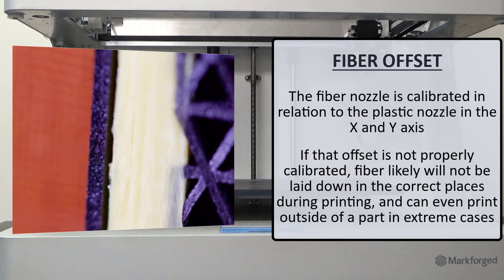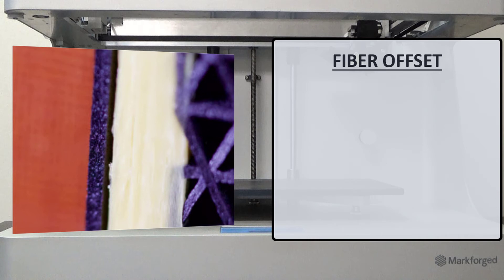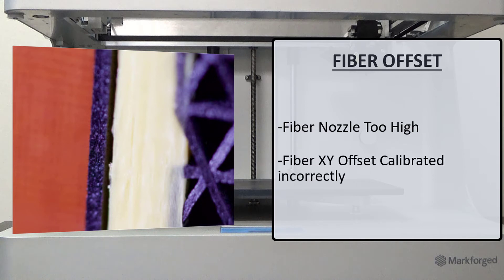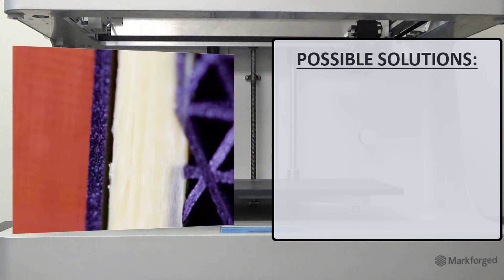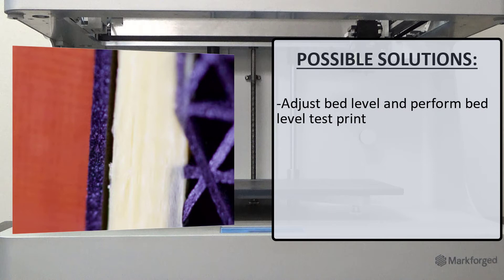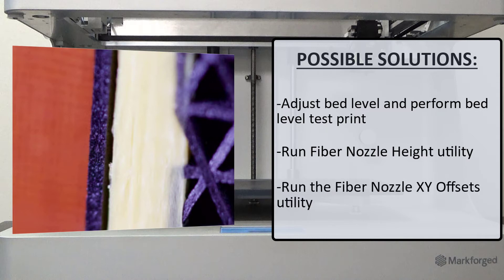Fiber can even print outside the part in extreme cases. Some common causes for this issue could be that your fiber nozzle is set too high, or your fiber X/Y offset is not calibrated correctly. The recommended troubleshooting steps would be to adjust the bed level and run the bed level test print, then run the fiber nozzle height utility to correctly set your fiber nozzle height, and then run the fiber nozzle X/Y offsets utility to correctly set the X/Y offset of your fiber nozzle.